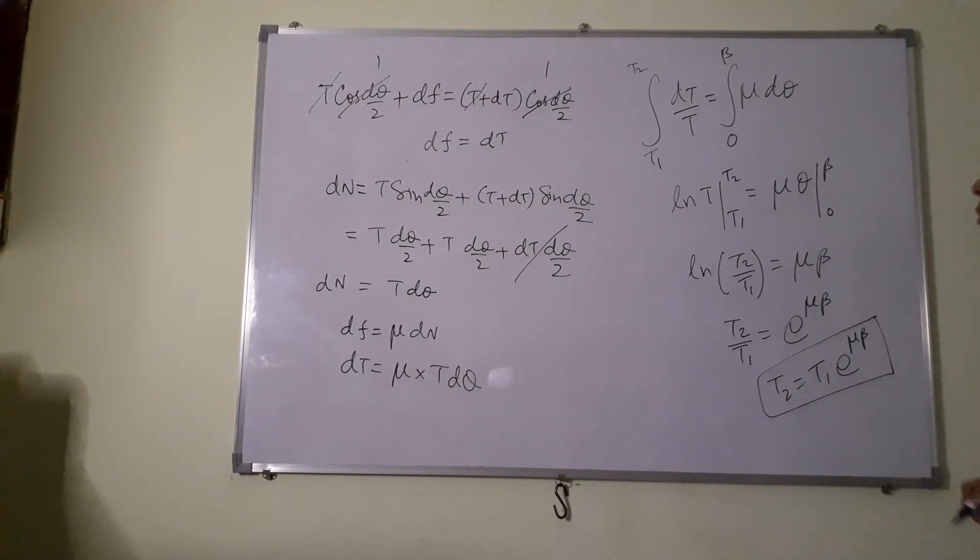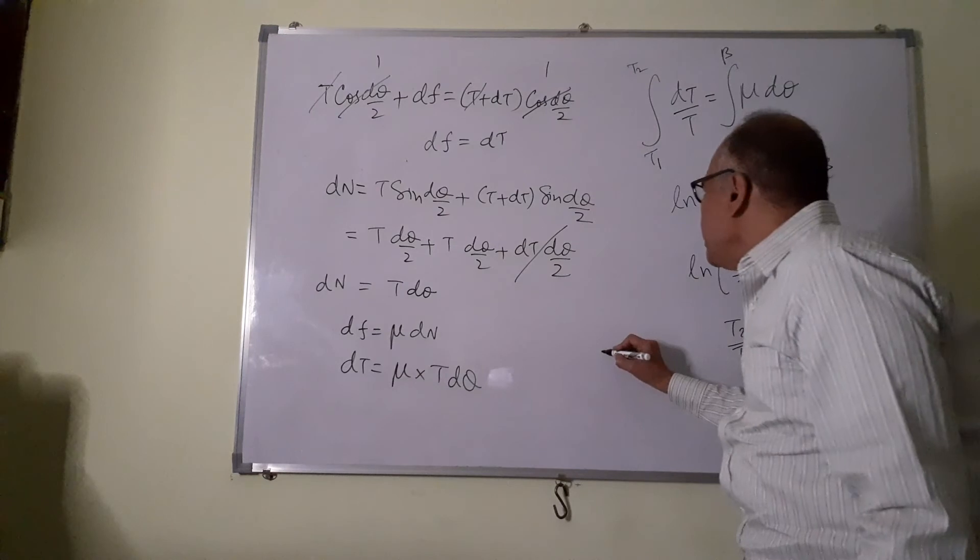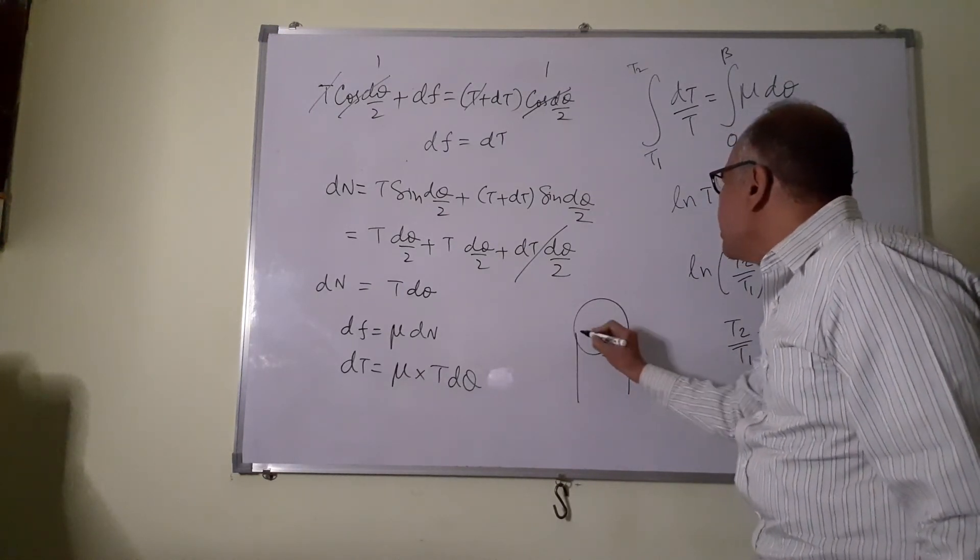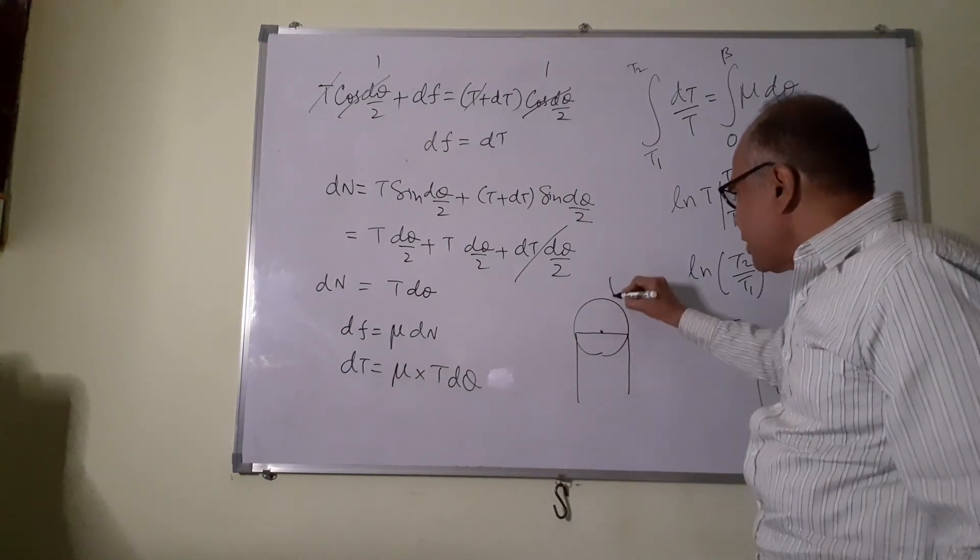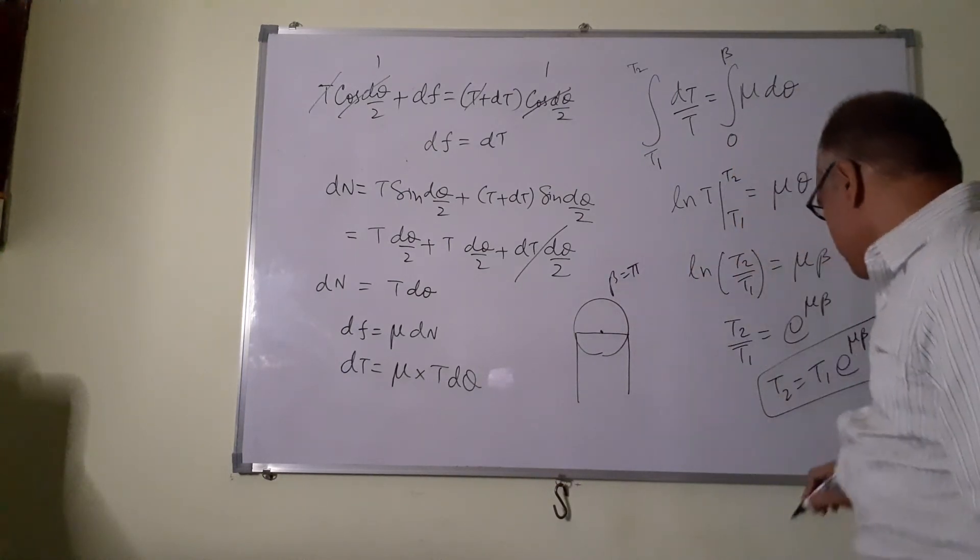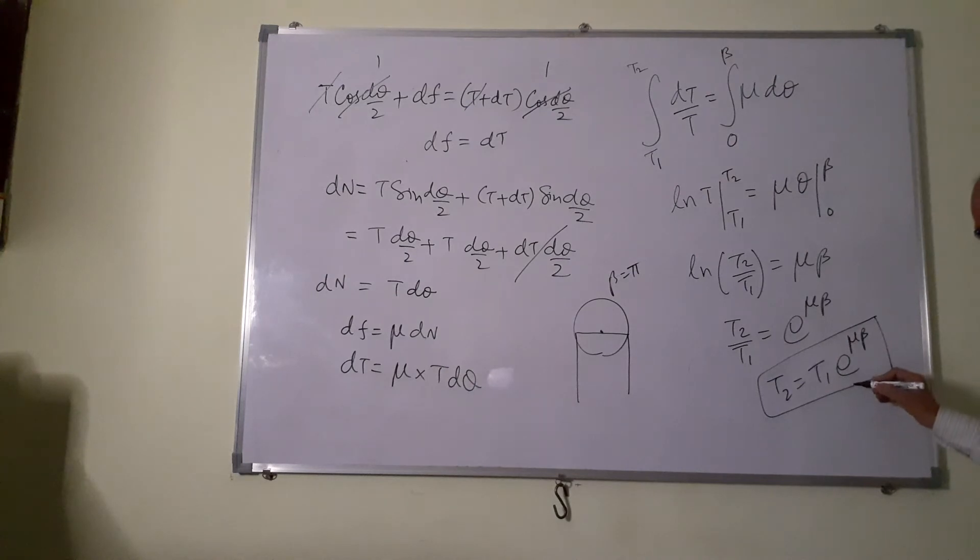Remember, if there is a pulley with two masses suspended on either side like that, vertically suspended, then beta will be pi. So T2 will be T1 into e power pi mu.